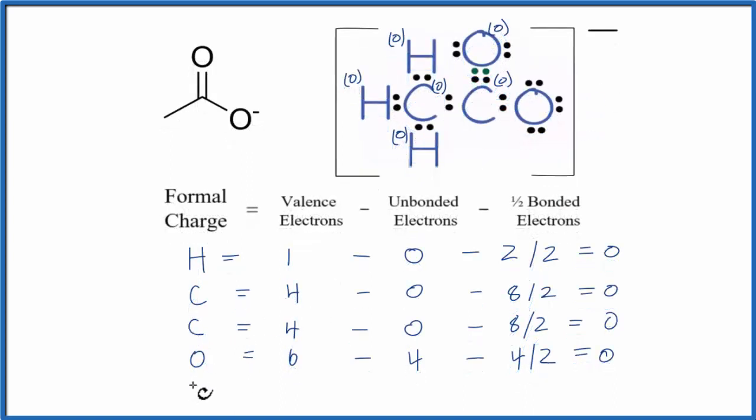And then the last oxygen. Oxygen, six valence electrons, subtracting the unbonded: two, four, six of those. Minus one half of the bonded. We have two here. So, six minus six is zero, minus one. We have a negative one charge. So, this oxygen has a formal charge of negative one, which isn't surprising because the overall acetate ion has a negative one charge. And in this representation, they put the negative charge on the oxygen with the single bond, which is what we found here with our Lewis structure.